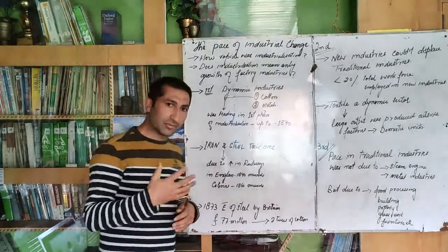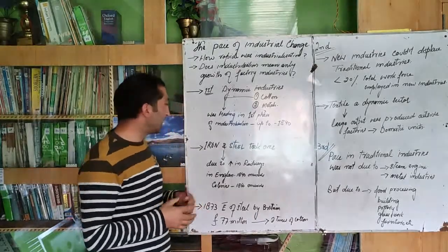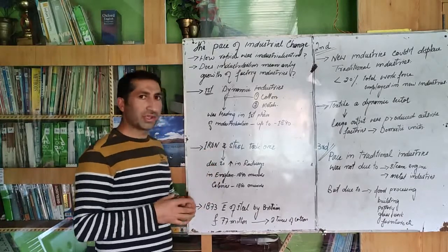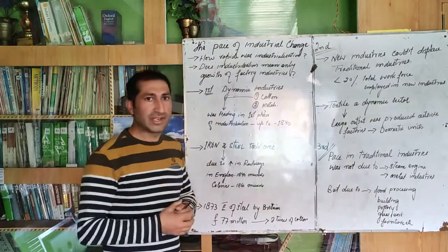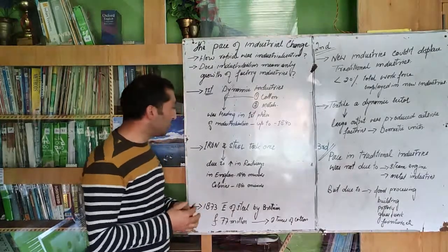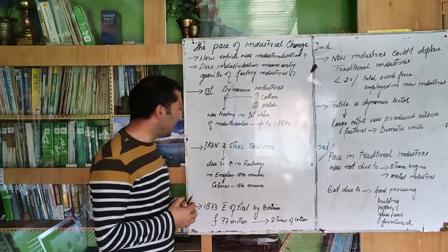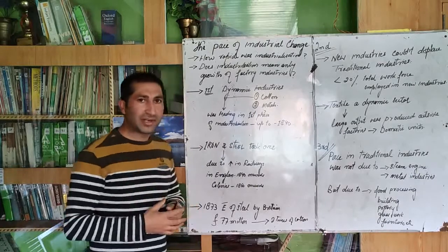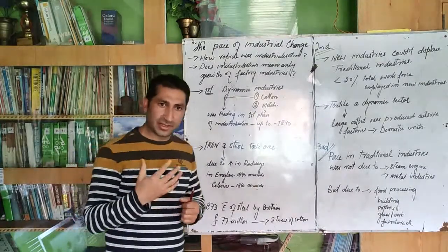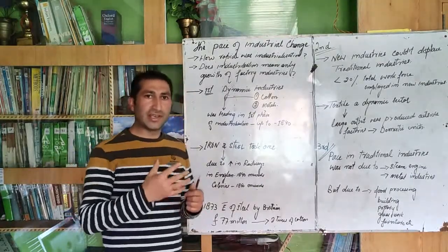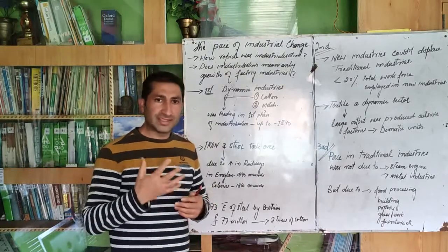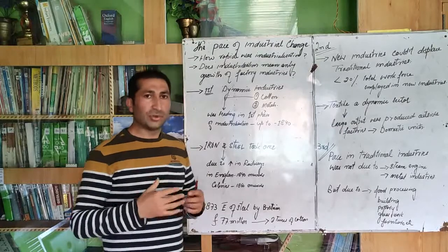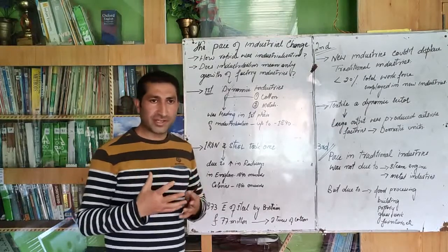But with the passage of time, we see that iron and steel took over. Iron and steel replaced it as the leading industry. How did it replace it? Due to the increase in the railway in England. When the railway increased, steel and metal industries increased in production and demand.